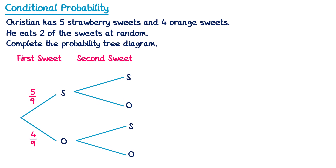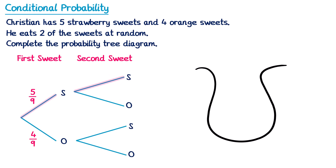When we look at the second branches this is where things are a little bit more interesting. Let's imagine for the first sweet we've selected a strawberry one. If we draw out the bag it has five strawberry sweets and four orange sweets. Because we've gone along this route we've selected a strawberry first, so we're going to take that strawberry sweet and eat it. Because we're not going to put it back in the bag this probability will now change. The total is now eight and there are now four strawberry sweets, so the probability of selecting a strawberry sweet now is four over eight. We call this a conditional probability because it depends on the conditions that have already happened.